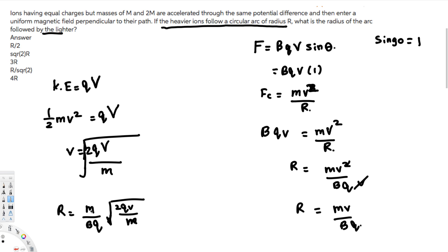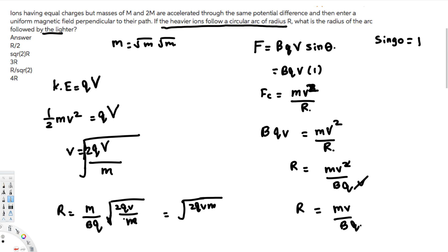We have square root of m in the denominator and m in the numerator. Expanding m as root m times root m, the root m in the denominator cancels with one root m from the numerator, leaving root m on top. So R equals the square root of 2QVm divided by BQ. This gives us the key relationship: radius is directly proportional to the square root of m.